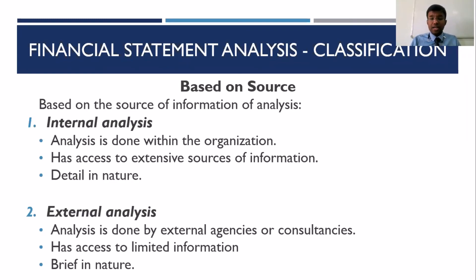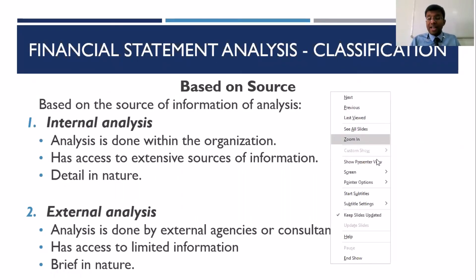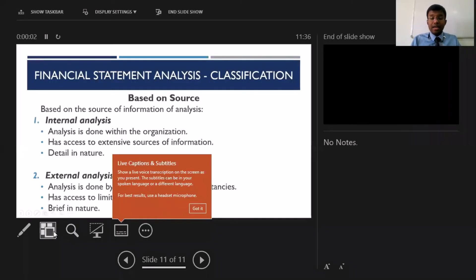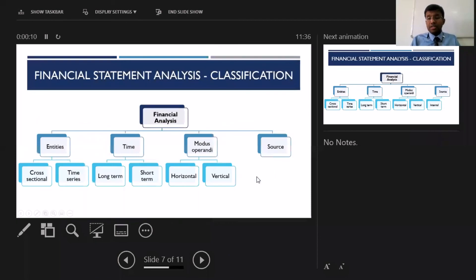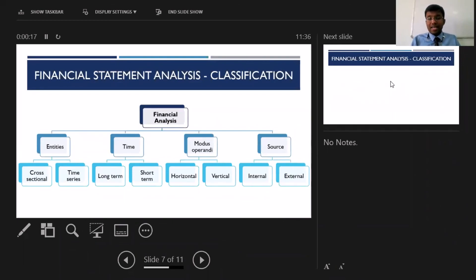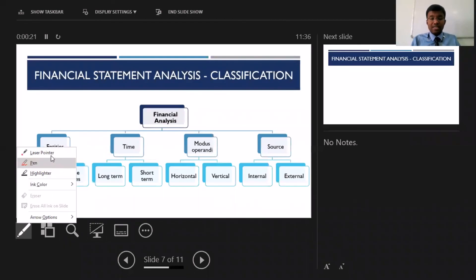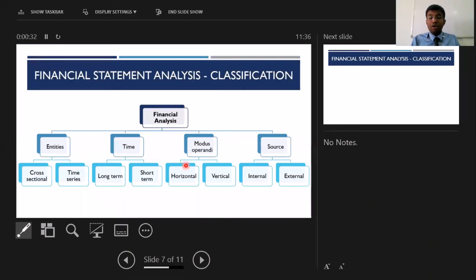To put everything together, the classification of financial statement analysis is as follows: based on entity, you have cross-sectional and time series; based on time, you have long-term and short-term; based on mode of operation, you have horizontal and vertical; and based on source, you have internal and external. These are the classifications of financial statement analysis learned in today's session.